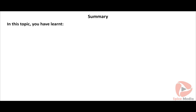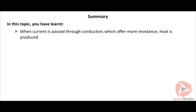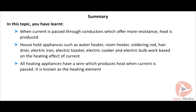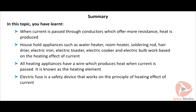In this topic, you have learned that when current is passed through conductors which offer more resistance, heat is produced. Household appliances such as water heater, room heater, soldering rod, hair dryer, electric iron, electric toaster, electric cooker, and electric bulb work based on the heating effect of current. All heating appliances have a wire which produces heat when current is passed — it is known as the heating element. Electric fuse is a safety device that works on the principle of the heating effect of current.